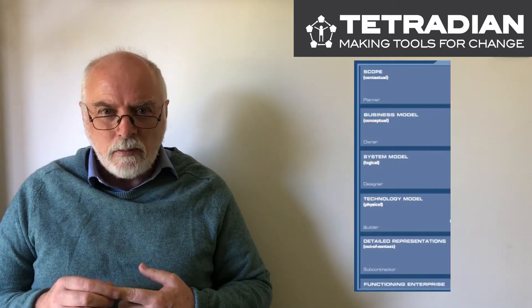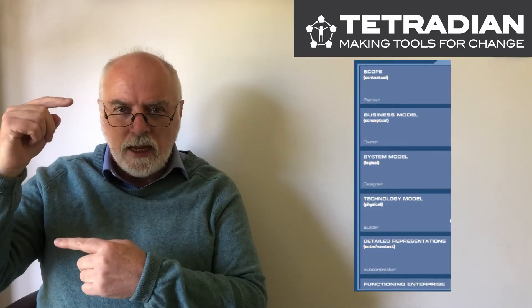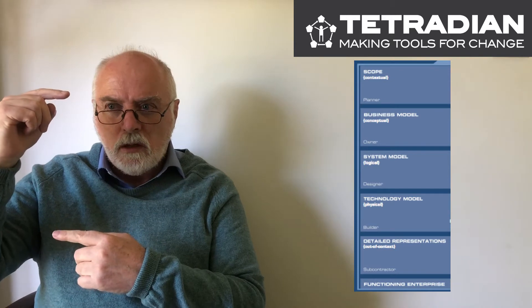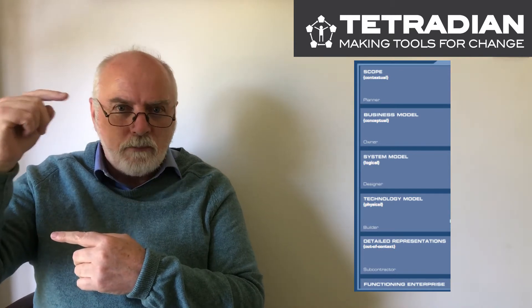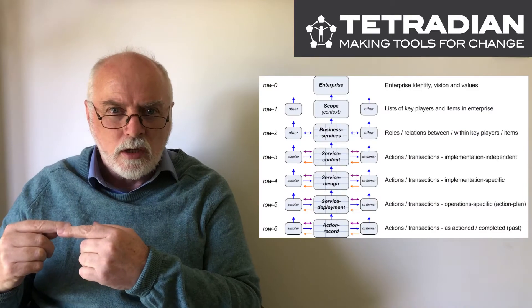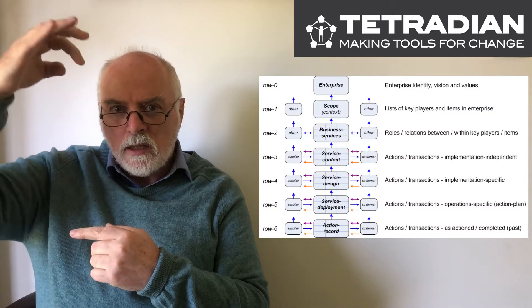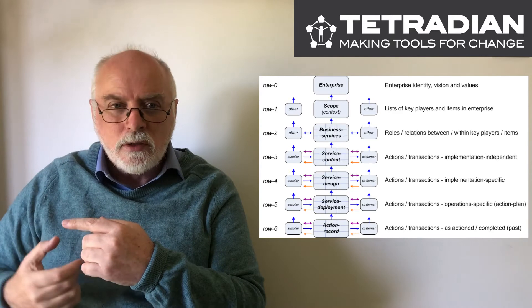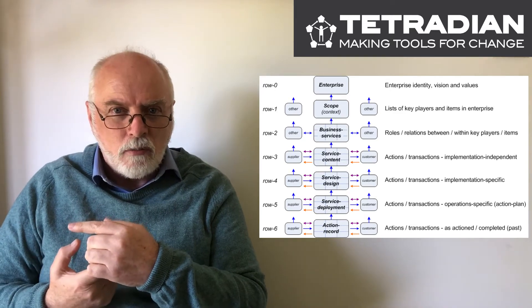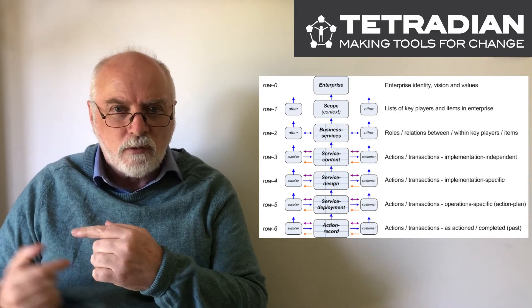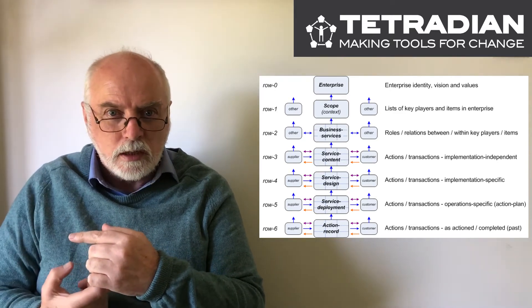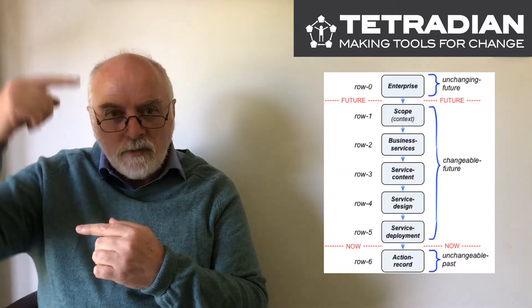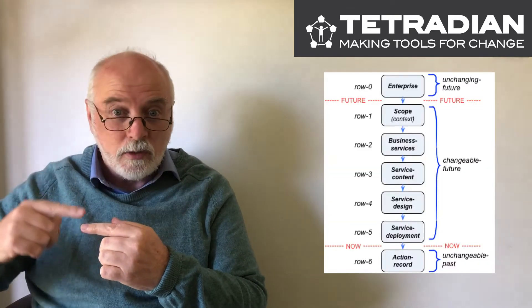A classic Zachman framework has five distinct layers from big picture down to implementation. What the extension adds is the whole enterprise — something that never changes or should never change — and also a kind of action record layer where we've transitioned from the future into the past, things that we can no longer change.